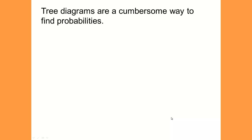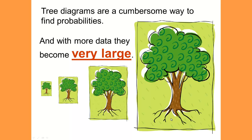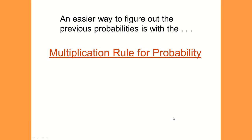Tree diagrams are a cumbersome way to find probabilities, and with any more data than what we've done right here they become very, very large. An easier way to figure out the previous probabilities is with the multiplication rule for probability.